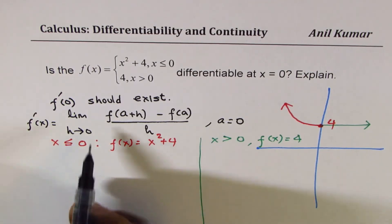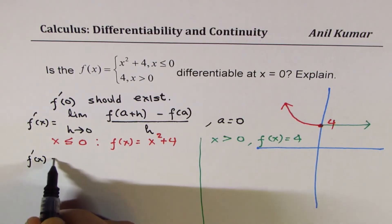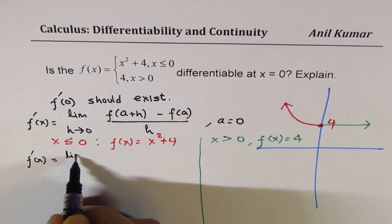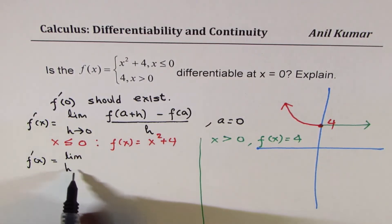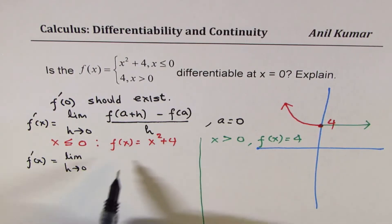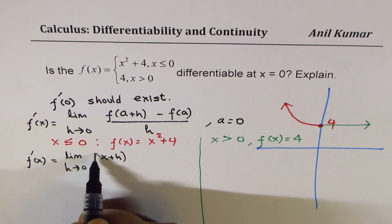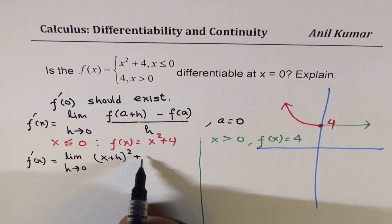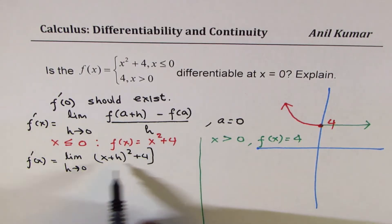So the general expression for the derivative will be f'(x) equals limit as h approaches 0. Now, when we're talking about this function, h approaches 0, it is going to be (x + h)² + 4, so that is a + h, you can say, right?